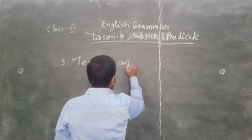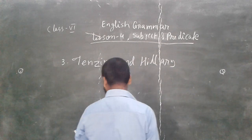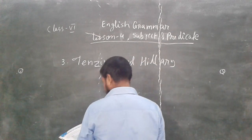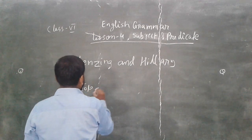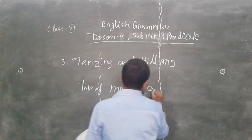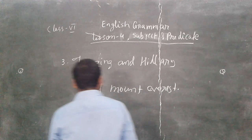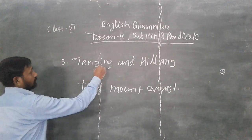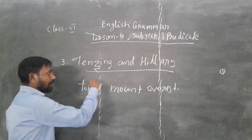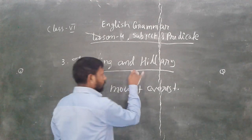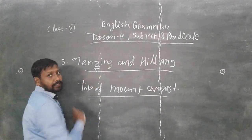Let's see some more examples. Tenzing and Hillary reached the top of Mount Everest. Now if you look here, Tenzing and Hillary, these are names. And they are doing anything—they have done what? They have topped, they have reached the top of Mount Everest. So they worked, and this is what is telling about Tenzing and Hillary, what they have done.